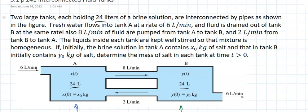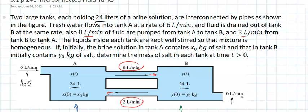Fresh water flows into tank A at a rate of 6 liters per minute, that's H2O, and fluid drains out of tank B at the same rate. Also, 8 liters per minute of fluid are pumped from tank A into B, and 2 liters per minute flow from B into A.